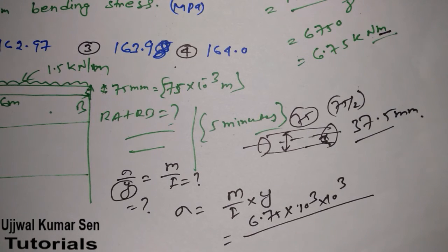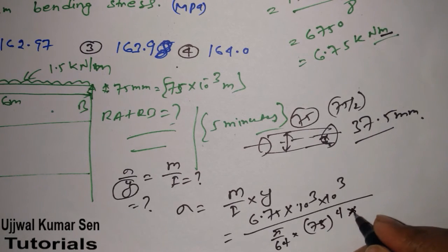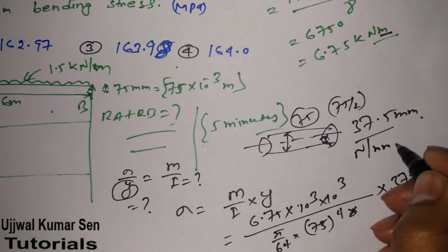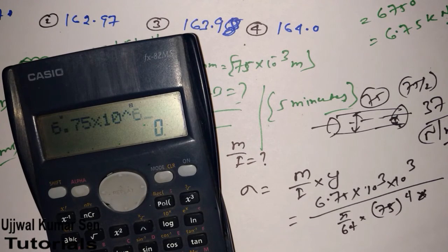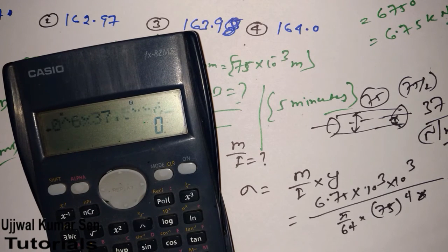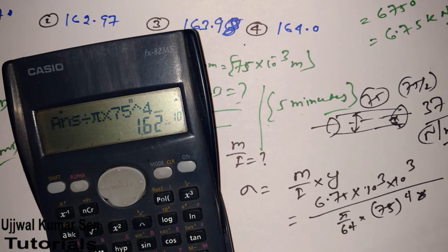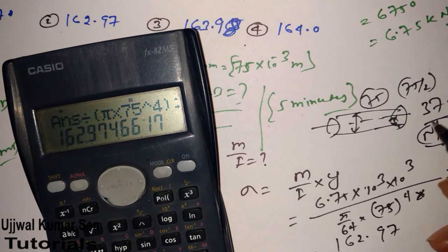The moment of inertia for a circular cross section is I = π/64 × d⁴ = π/64 × 75⁴. Now calculating σ: (6.75 × 10⁶ × 37.5 × 64) / (π × 75⁴). Working through this calculation gives approximately 162.97.